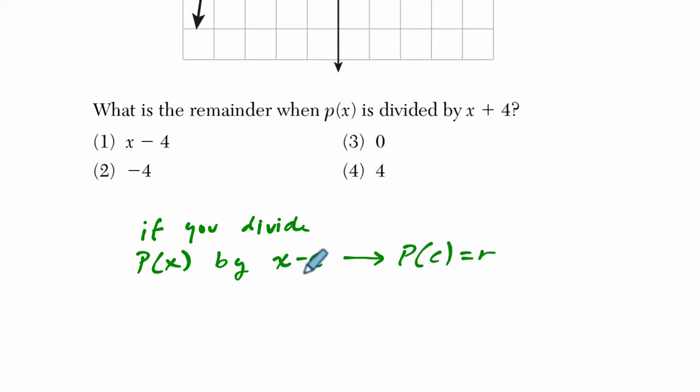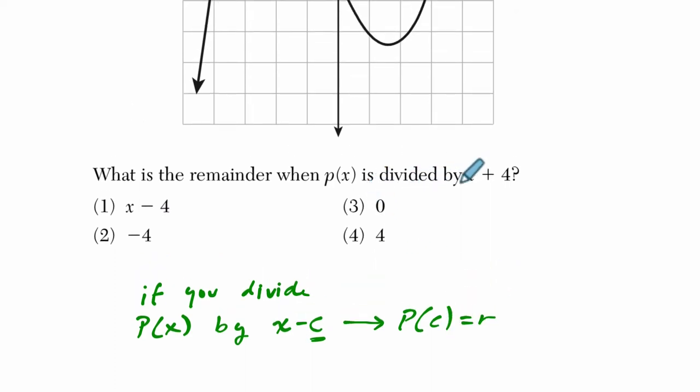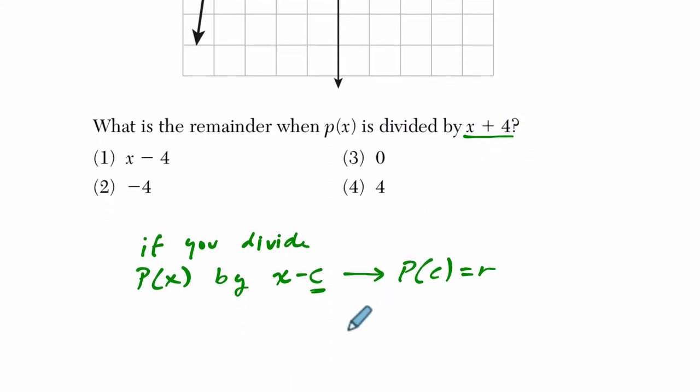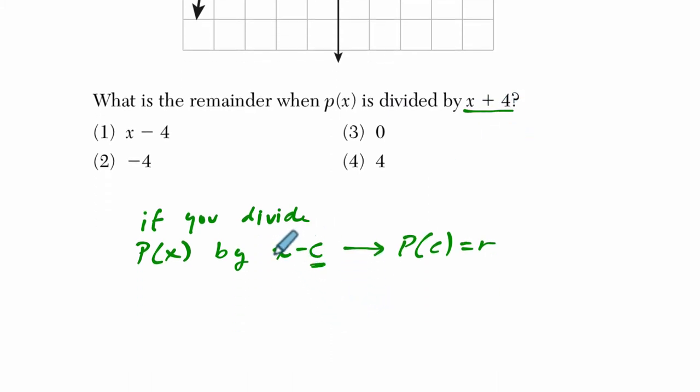So R is the remainder. So in other words, if you plug in the value of C, what you get is the remainder. Now, what's interesting is here, if we're dividing by X plus 4, notice how this is written as X minus C.